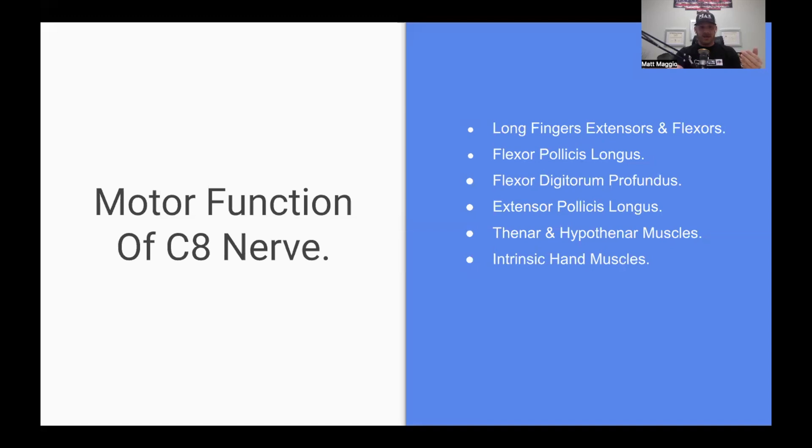So the C8 nerve root, the motor function of it does a lot of things, but it really starts with a lot of things in the flexor component of the arm and the wrist and the forearm. It covers the long fingers, extensors, and flexors.